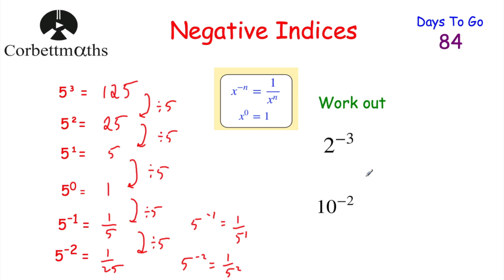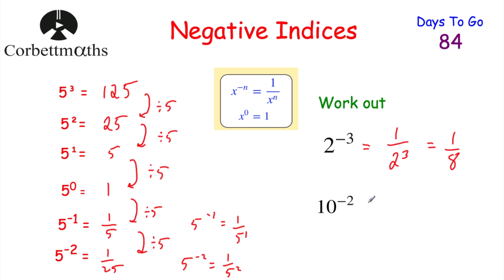Let's look at a couple of examples. First: 2 to the power of negative 3. Because we've got a negative power, write 1 over, then make the power positive: 2 cubed. 2 × 2 × 2 = 8, so the answer is 1/8. Next: 10 to the power of negative 2. Again, 1 over 10 squared = 1/100. So that's negative indices.